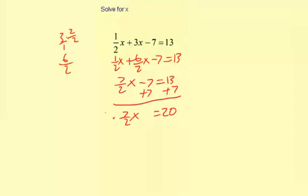Multiply by the reciprocal, that's 2/7. This simplifies to just x because it makes 14 divided by 14. So we get x equals 20 times 2, which is 40, and then divided by 1 times 7, which is 7.